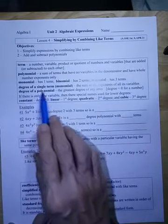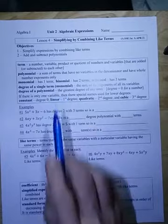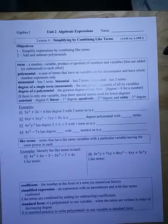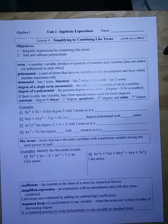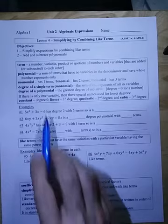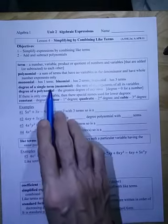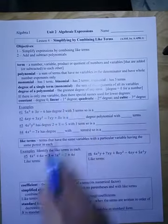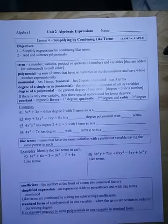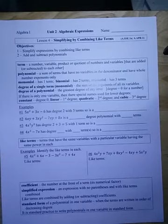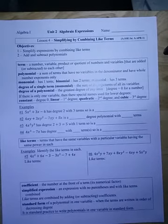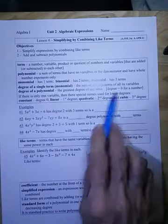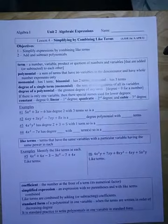The degree of a single term, or monomial, is the sum of the exponents of all of its variables. For a whole polynomial — made up of monomials added or subtracted from each other — we take the greatest degree of any term. If it's just a number, the degree is zero.